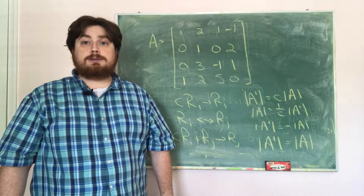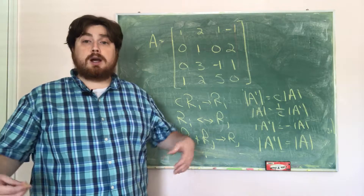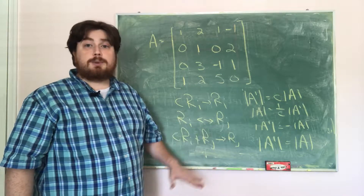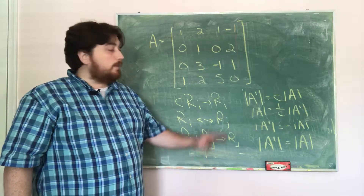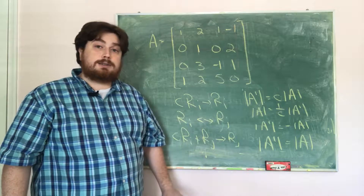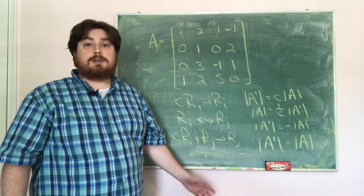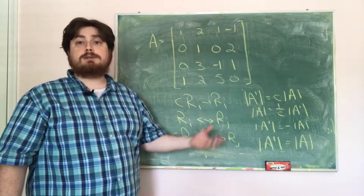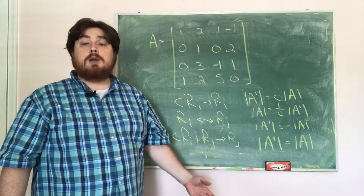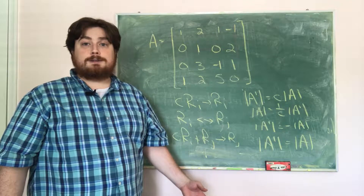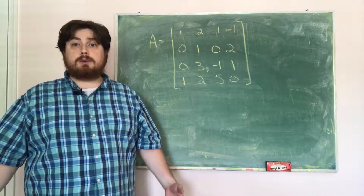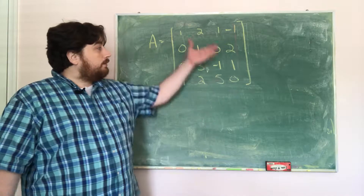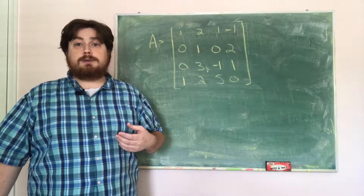Now when we're just interested in a determinant, we can also do column operations — the same thing for columns as we would for rows — and they're going to affect the determinant in exactly the same way as row operations would. Now that we know what we can do when reducing and how it affects the determinant, I'm going to start reducing this matrix.